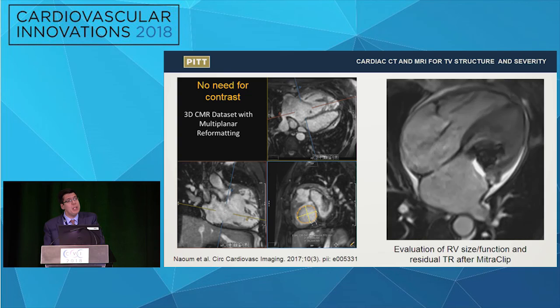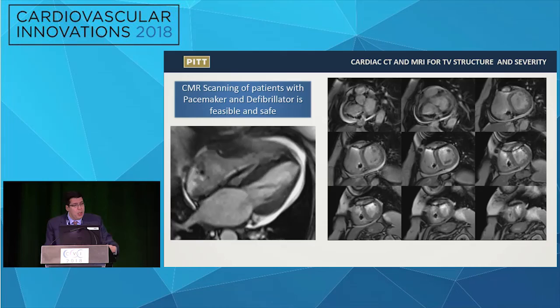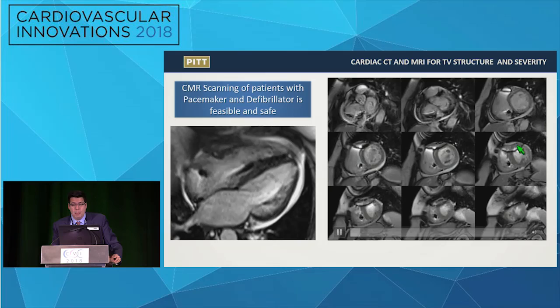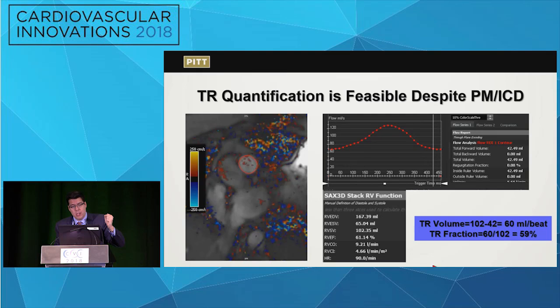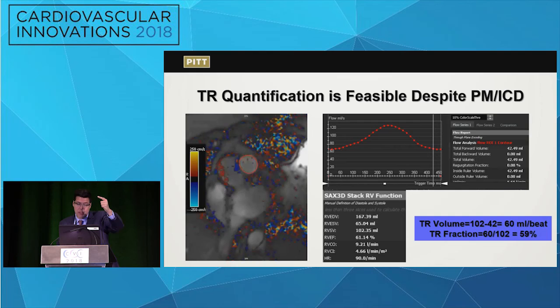Technology continues to evolve. For patients in heart failure, free-breathing real-time imaging is now available — the tradeoff is decreased temporal and spatial resolution. New software development can average a significant number of cardiac cycles to precisely measure ejection fraction. Regarding right ventricular outcomes, perhaps the most important parameter to track is RV function and RV dilation — patients with tricuspid regurgitation don't die from the tricuspid regurgitation itself, they die from RV failure. Intervening before that point is critical.